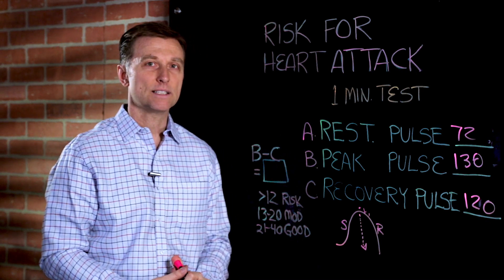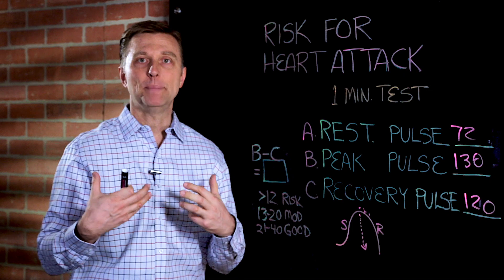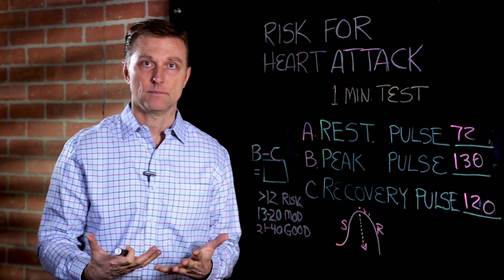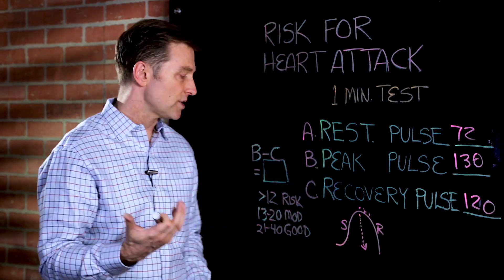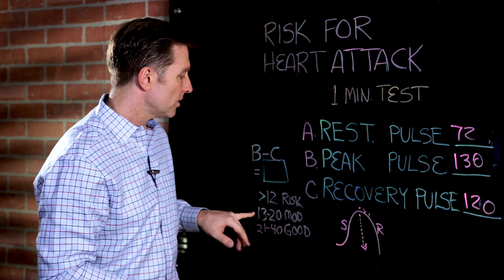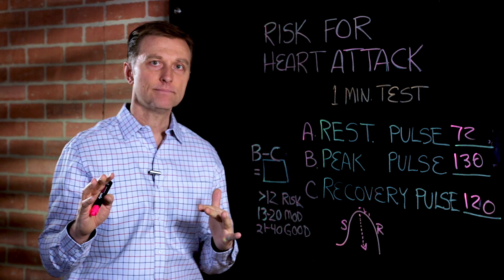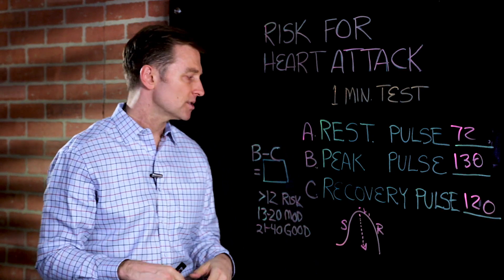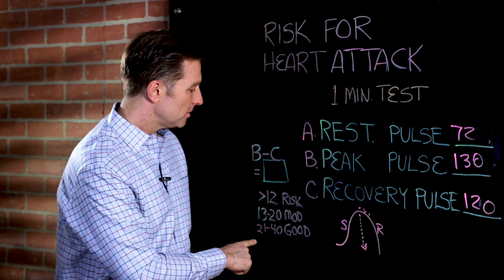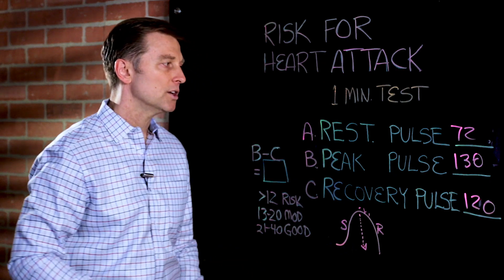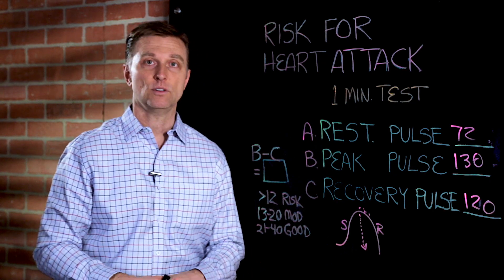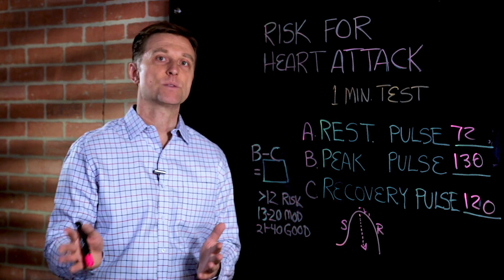If your numbers are between 13 and 20, you have a moderate risk. Not too bad. You're right in the range. It's kind of the gray area. But if you're between 21 and 40, you're good. That's normal. You don't have to worry about it. Your heart is responding normally.